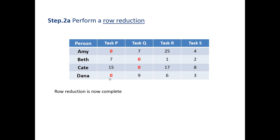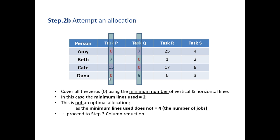Now we've completed our row reduction. We now want to check and see if we got an allocation, a correct allocation. Now this seems a little bit abstract, but all you need to do is look at what's the minimum number of either vertical lines or horizontal lines we need to use to cover up all the zeros. So in this case, I can use one vertical line on task P and one vertical line on task Q, and I've covered all the zeros.